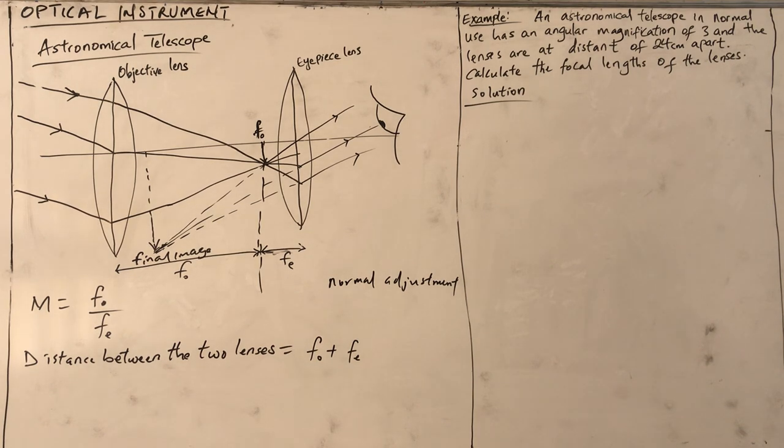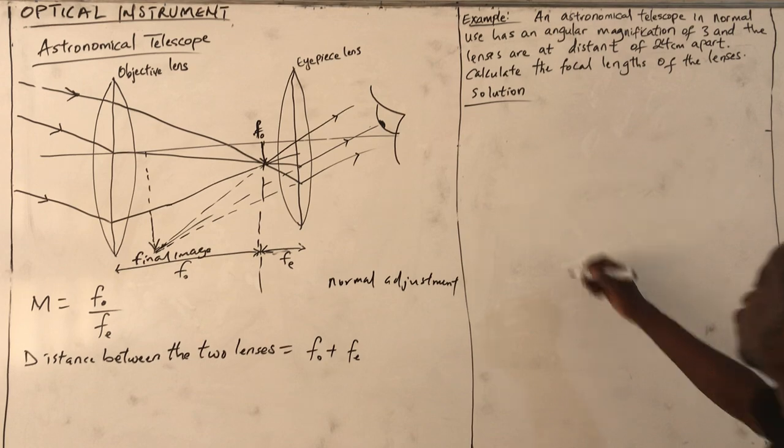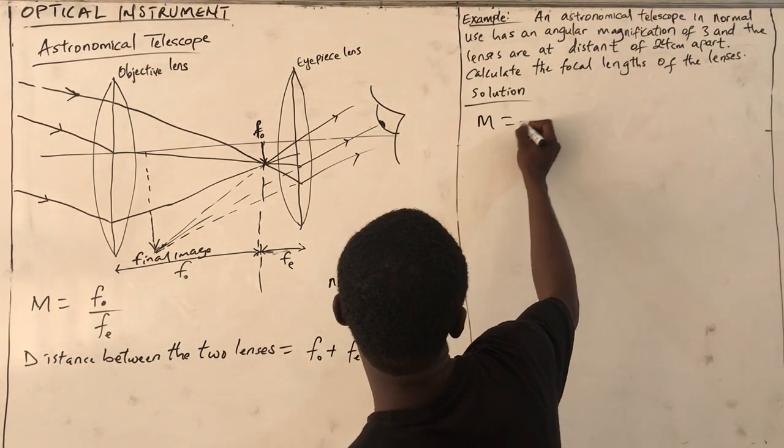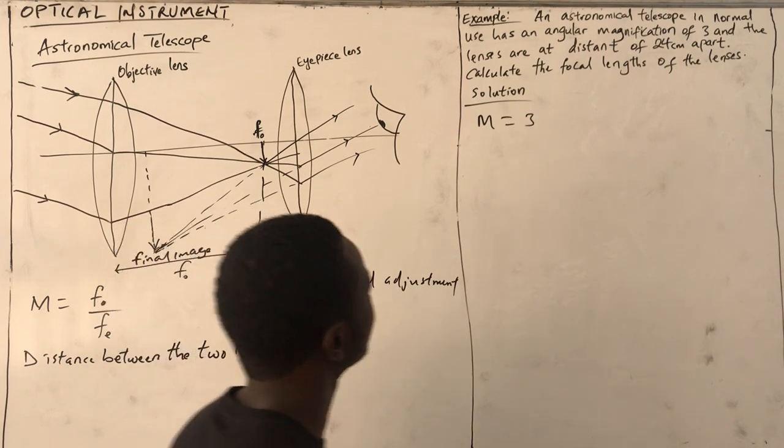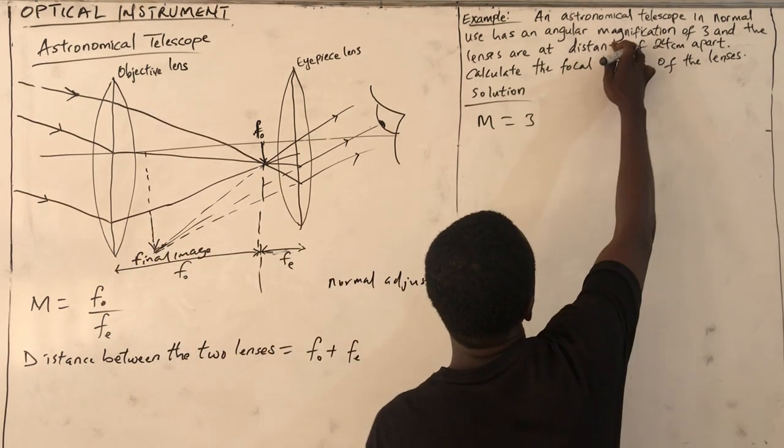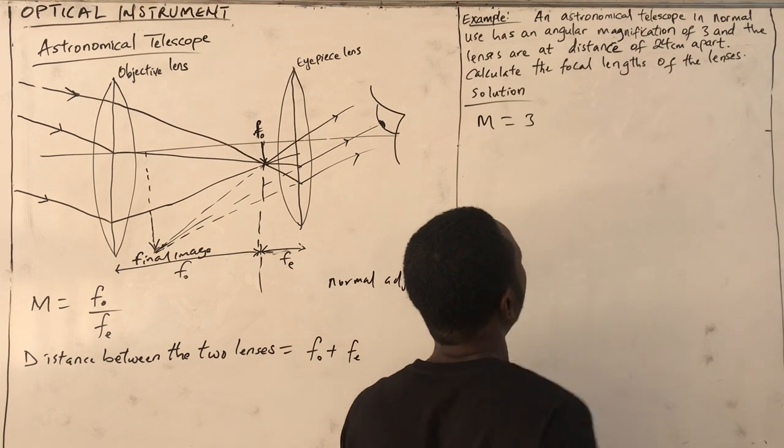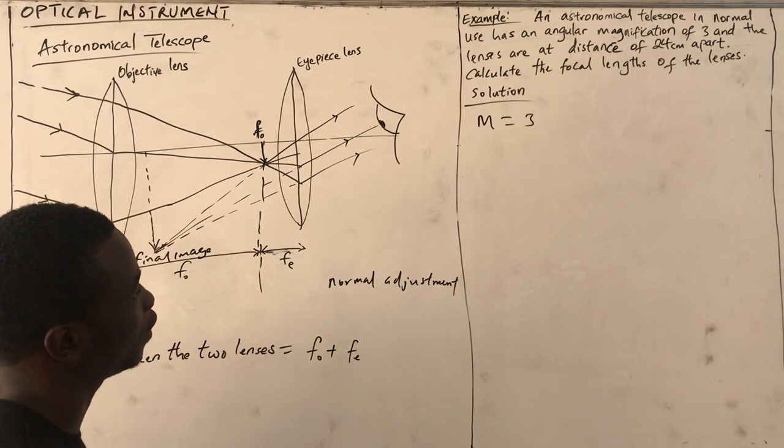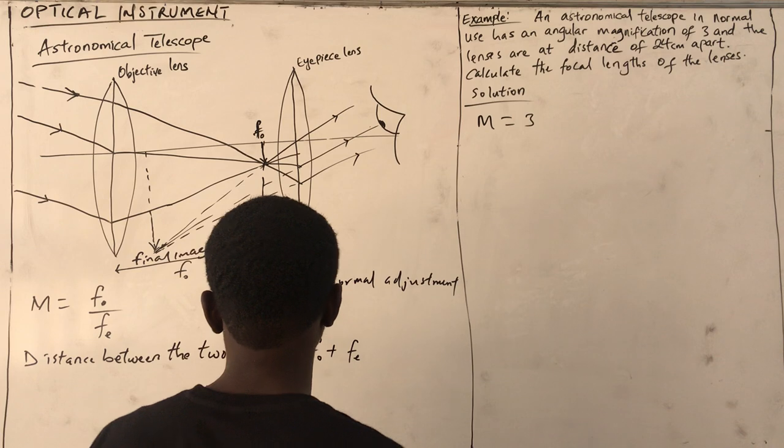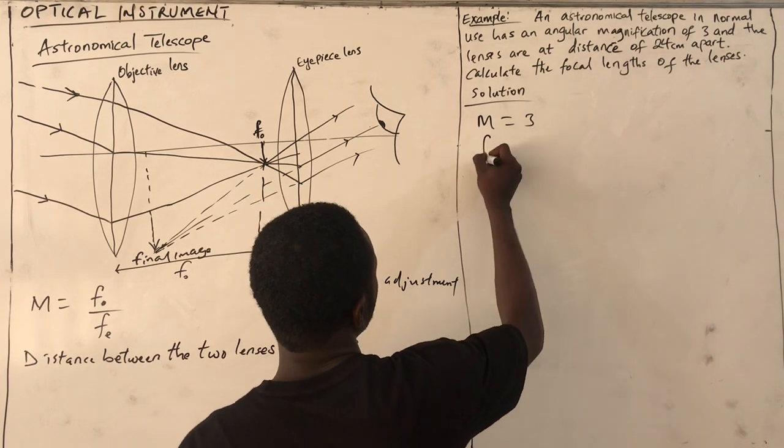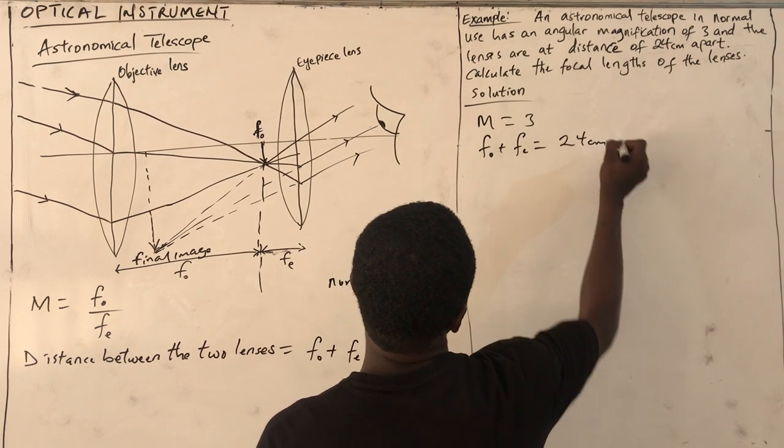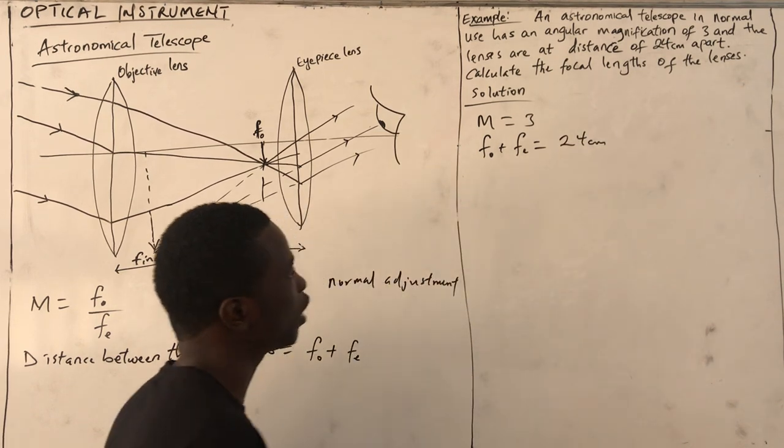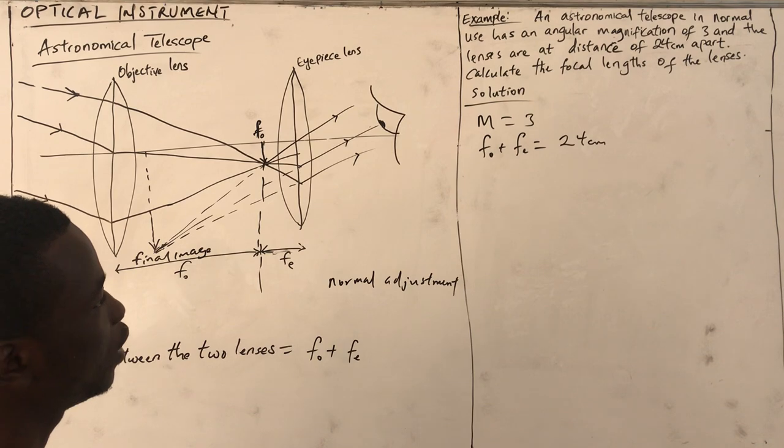An astronomical telescope in normal use has an angular magnification of 3, so M = 3. The lenses are 24 cm apart, so the distance between the lenses, F₀ + Fₑ, is equal to 24 cm. Calculate the focal length of the lenses.